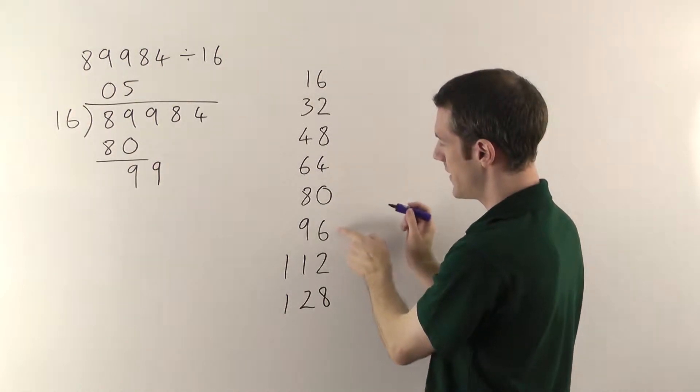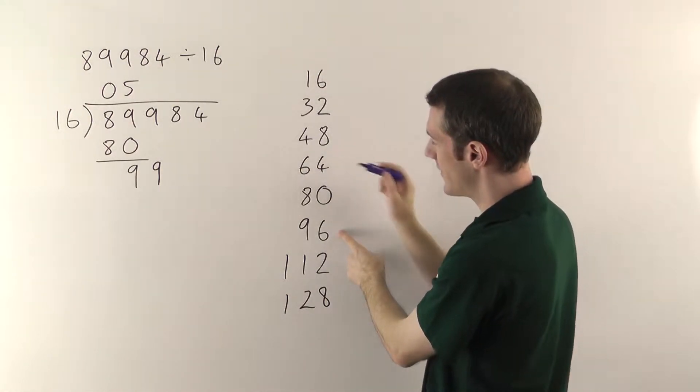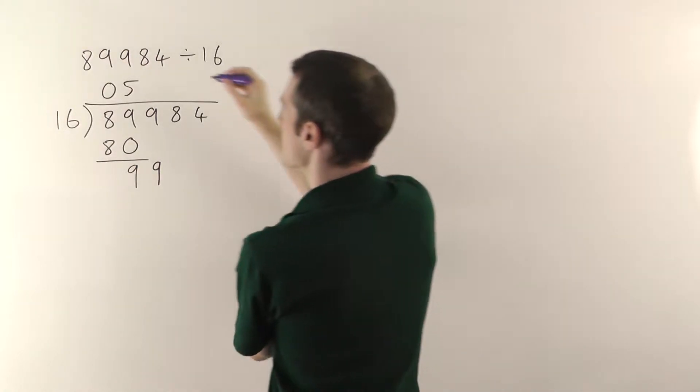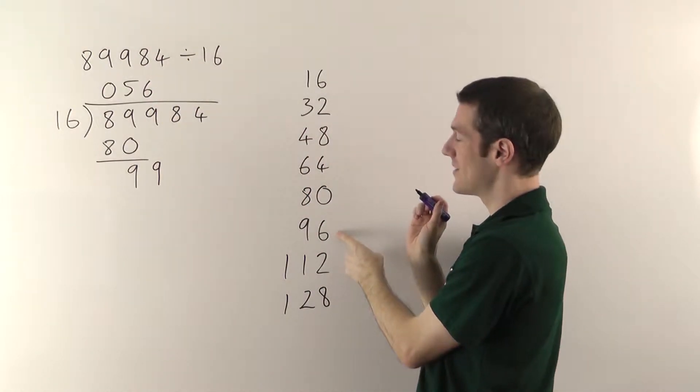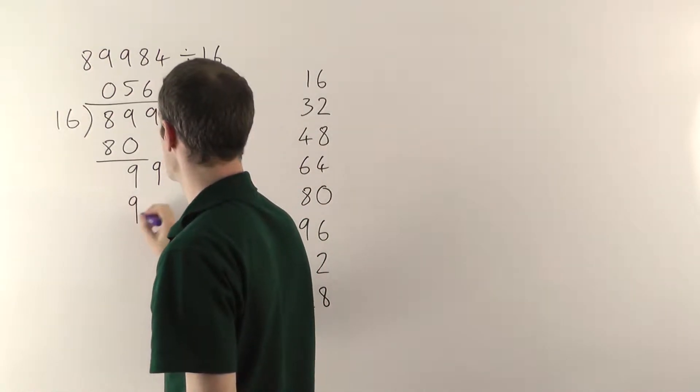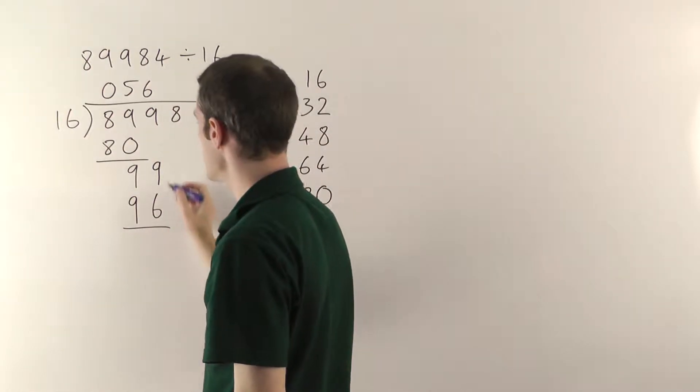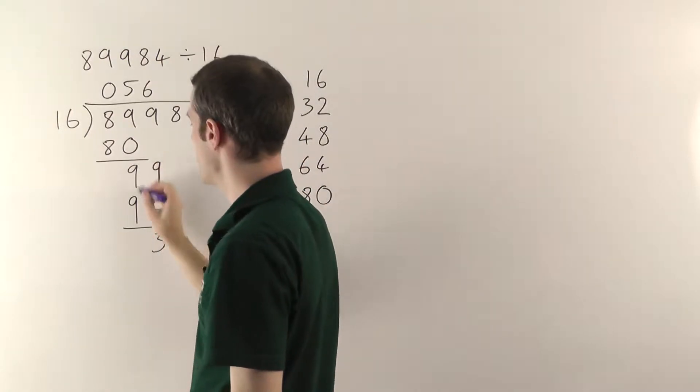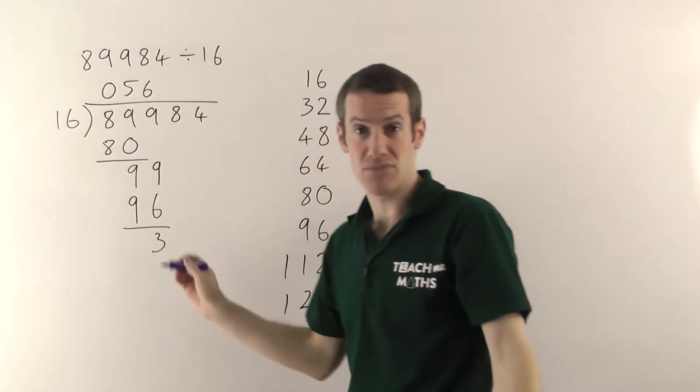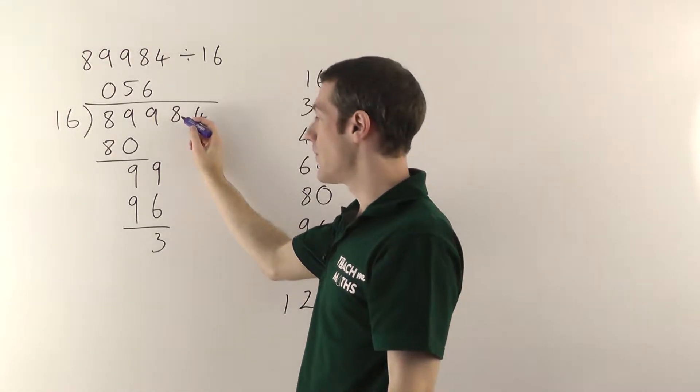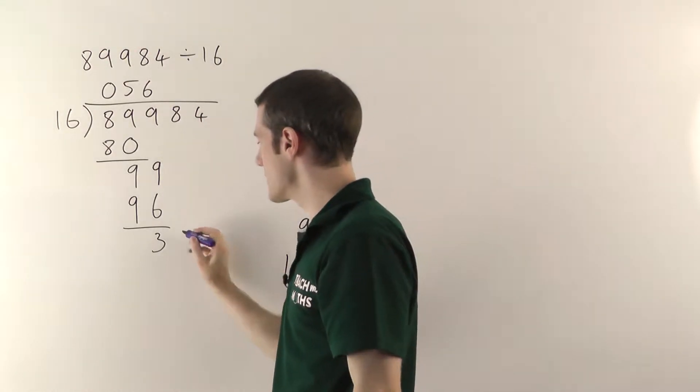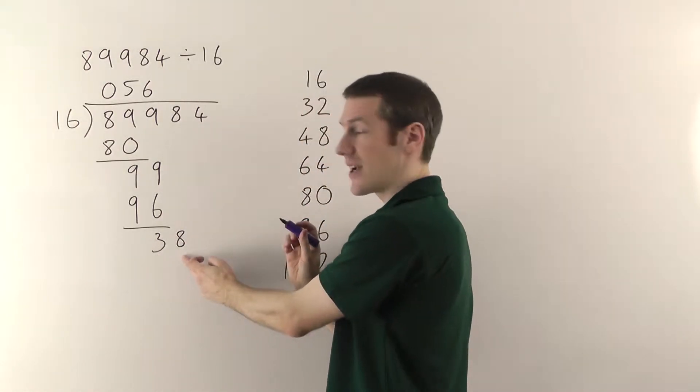Then having done the subtraction, you take the next digit and it drops down to sit next to this one you've got here. The nine comes down to here making this into ninety-nine. How many sixteens go into ninety-nine? Six times. So your six goes at the top there. Six sixteens were ninety-six, so you write that underneath. Nine minus six is three. Then the next digit drops down, the eight comes down next to the three to make thirty-eight.